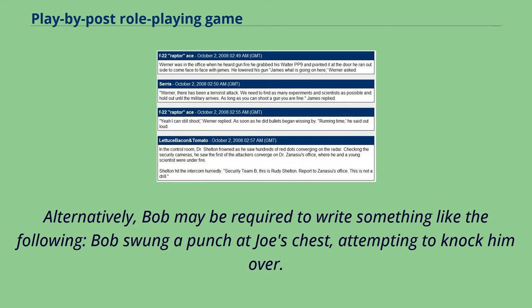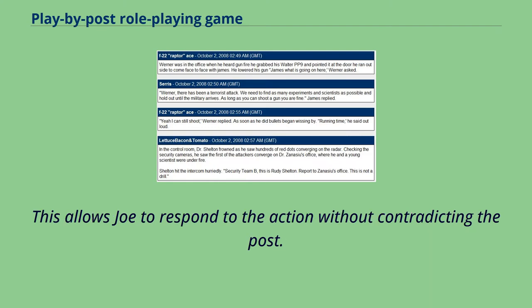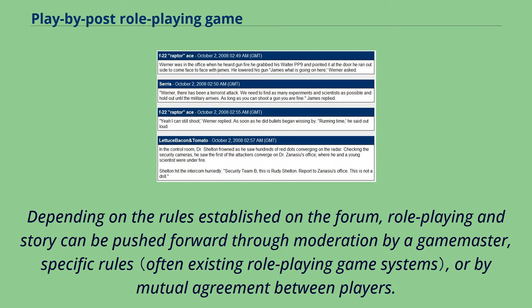Alternatively, Bob may be required to write something like the following: "Bob swung a punch at Joe's chest, attempting to knock him over." This allows Joe to respond to the action without contradicting the post. Depending on the rules established on the forum, role-playing and story can be pushed forward through moderation by a game master, specific rules, or by mutual agreement between players.